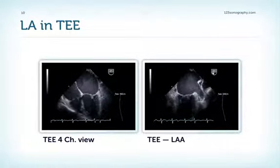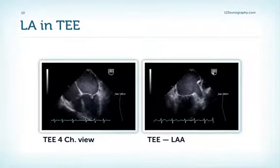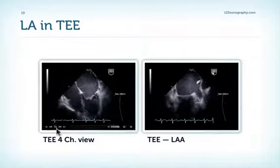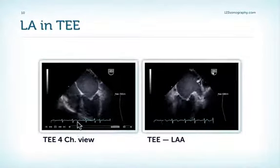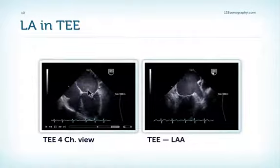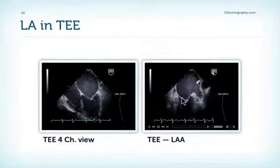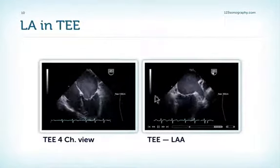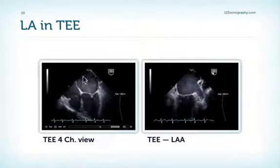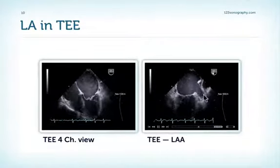Transesophageal echocardiography is particularly valuable to look at the left atrium. These are two examples showing how good the image quality can be with transesophageal echo — we can even see flow within the left atrium in this patient with severe mitral stenosis, where we have slow flow phenomena in the left atrium and in particular in the left atrial appendage.